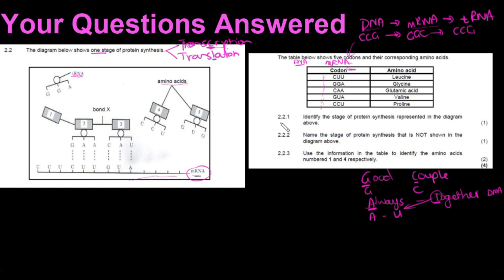Question 2.2.1 asks: identify the stage of protein synthesis represented in the diagram. We've identified it as translation. If they ask for a reason, you could say: the presence of tRNA. Question 2.2.2 asks: name the stage of protein synthesis not shown in the diagram. That would be transcription.